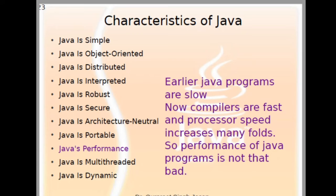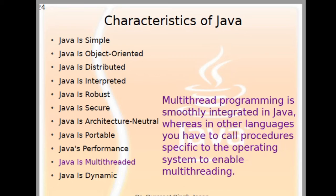Java's program performance is very high. Earlier Java programs were slow, but now compilers are fast and processor speeds have increased many-fold, so the performance of Java programs is not bad. Java is also a multi-threaded programming language. Multi-threaded programming is smoothly integrated in Java, whereas in other languages you have to call procedures specific to the operating system to enable multi-threading. We can run many short programs simultaneously using multi-threading, and divide tasks for simultaneous execution.